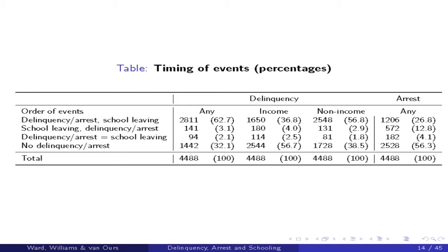To summarise the ordering in a table: 63% of the sample commit delinquency before leaving school, versus 3% who commit delinquency after leaving school. 26.8% are arrested before leaving school, versus 13% who are arrested after leaving school. If you look at the timing of when things happen, there's a lot of information in there that should help policymakers think about these processes.